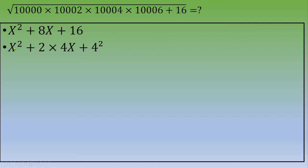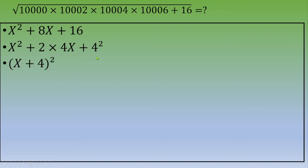So X² + 8X + 16 factors as (X + 4)². This is the remarkable identity a² + 2ab + b² = (a + b)². Therefore we can write the whole expression under the square root as (X + 4)².